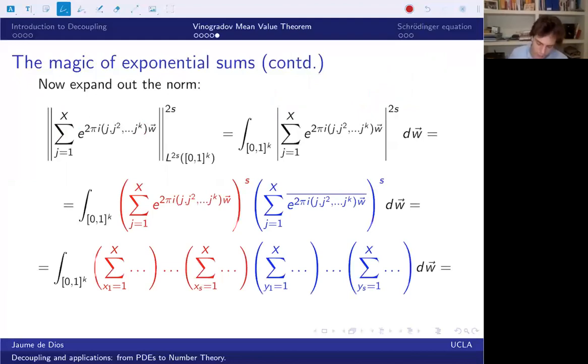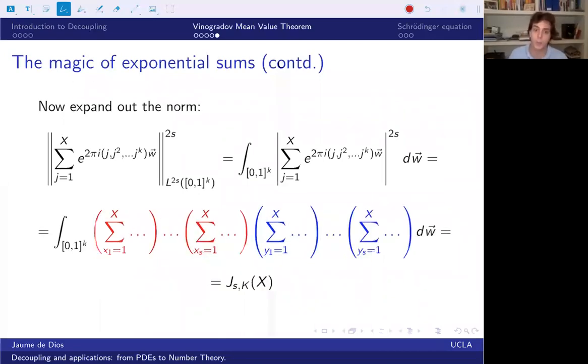When I brute force expand this product, I will choose x1, I will get like a lot of monomials. And for each monomial, I will have every possible value of x1, every possible value of xs, every possible value of y1, and every possible value of ys. So I will be summing over all the possible values of x1 to xs, y1, and ys. And the monomial, the thing that I will be summing, is the product of the exponentials. So essentially what we saw before. And in particular, this is equal to J_{s,k} of X.